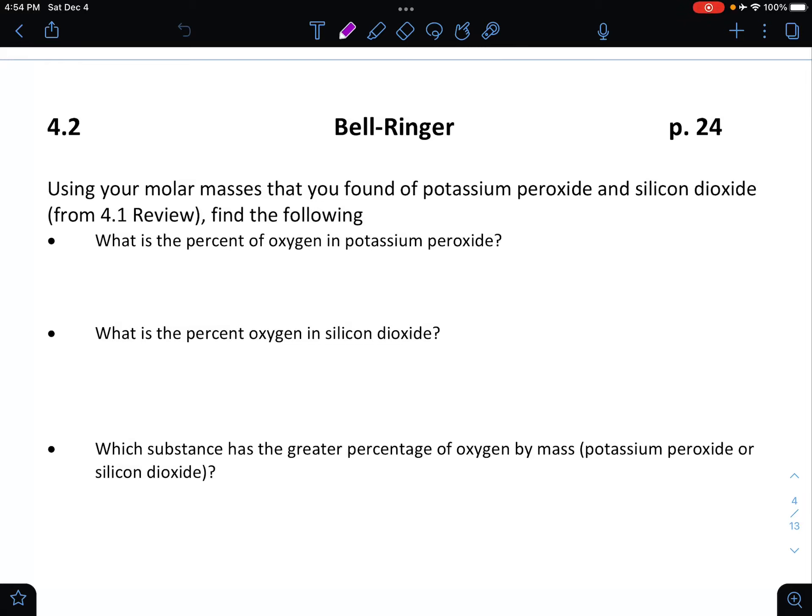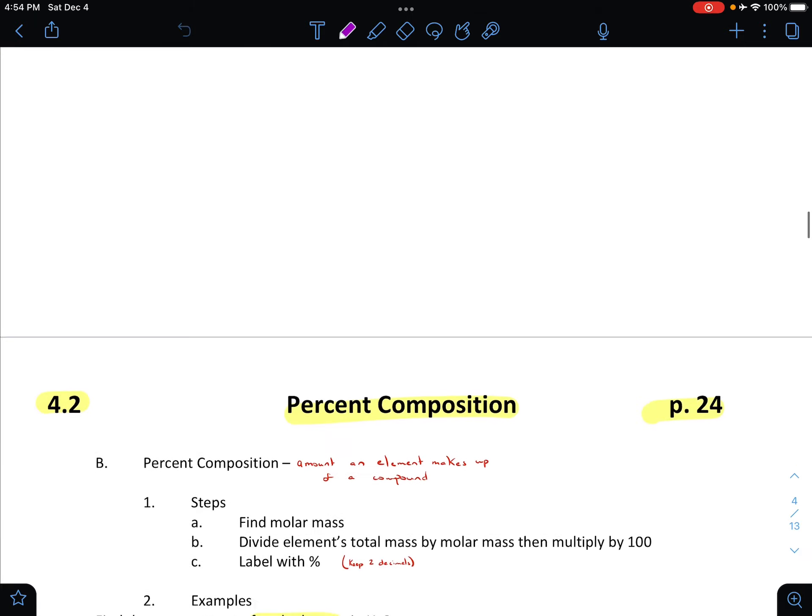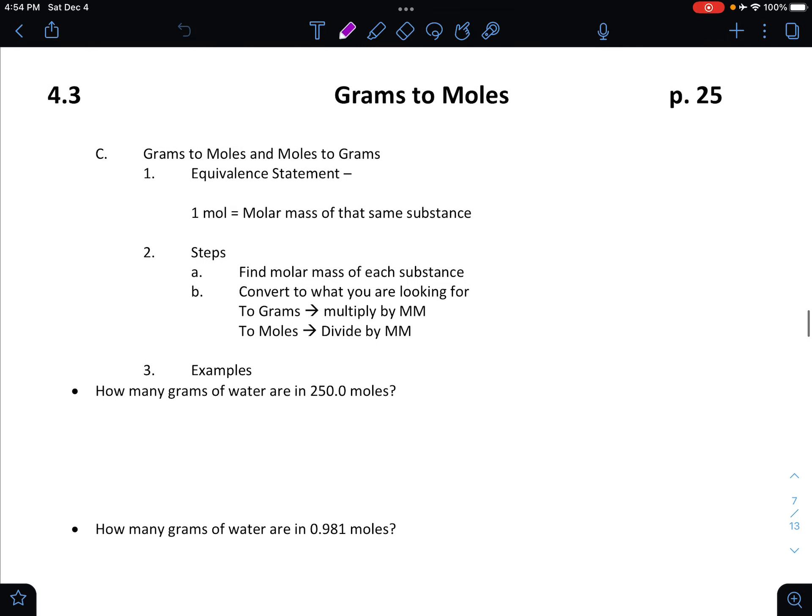Hey students, welcome back. This is going to be 4.3 notes, but first here is your bell ringer in case you wanted to jump ahead. We have already done this bell ringer if you were in class, but if not, go ahead and grab it. So here we go, jumping right in. Today we're going to be converting grams to moles, so we're going to be using those molar masses that we've been calculating all along to perform some calculations. We're going to convert to moles. Remember, we said moles were an amount of substance.